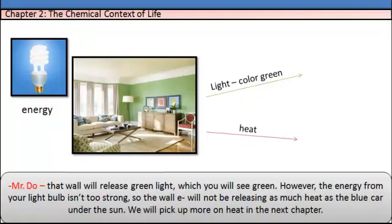That wall will release green light, which you will see green. However, the energy from your light bulb isn't too strong, so the electron will not be releasing as much heat as the blue car under the sun. We will pick up more on heat in the later chapter.